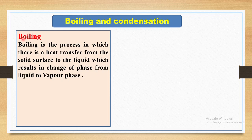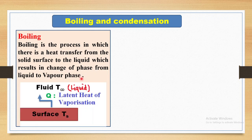Boiling is the process where there is heat transfer from a solid surface to a liquid, which results in change of phase from liquid to vapor phase. For example, in this diagram, the surface is at temperature Ts and it is exposed to the fluid at temperature T infinity — the fluid being liquid. Here Ts is greater than T infinity, so heat transfer takes place from the surface to the fluid, causing the liquid to undergo change of phase from liquid to vapor. The heat being transferred is called latent heat of vaporization.